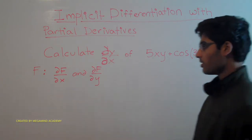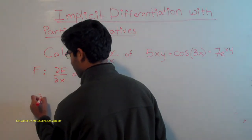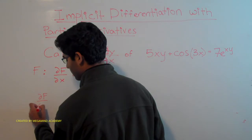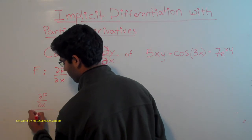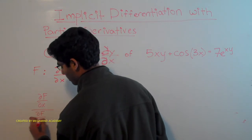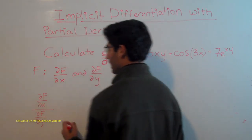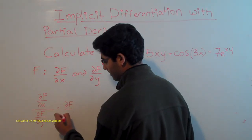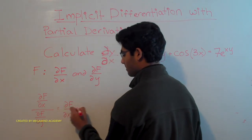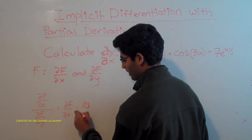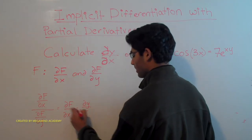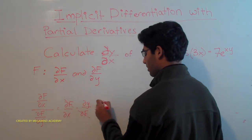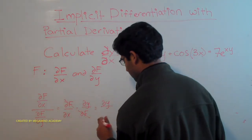So the thing that we can do is we can do ∂f/∂x over ∂f/∂y. And so what this would give us is ∂f/∂x times dy over ∂f. These two would cancel out, which would give us dy/dx.